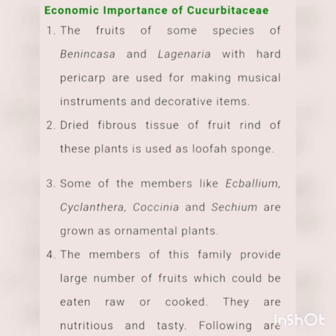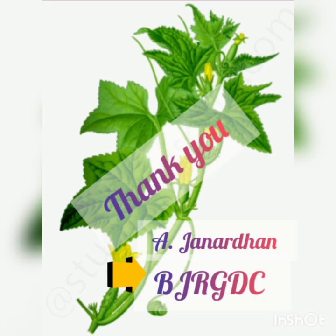Economic importance of Cucurbitaceae: the fruits of some species of Benincasa and Lagenaria with a hard pericarp are used for making musical instruments and decorative items. Dried fibrous tissue of the fruit rind is used as loofah sponge. Some members like Ecballium, Cyclanthera, Coccinia, and Sechium are grown as ornamental plants. Members of this family provide a large number of foods which can be eaten raw and cooked; they are nutritious and tasty.